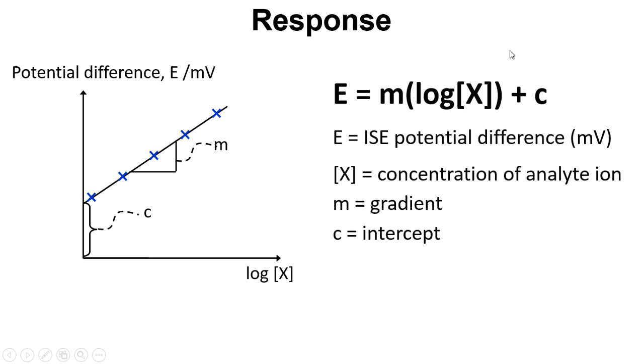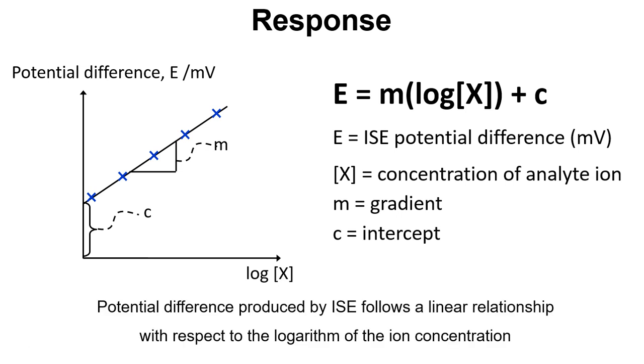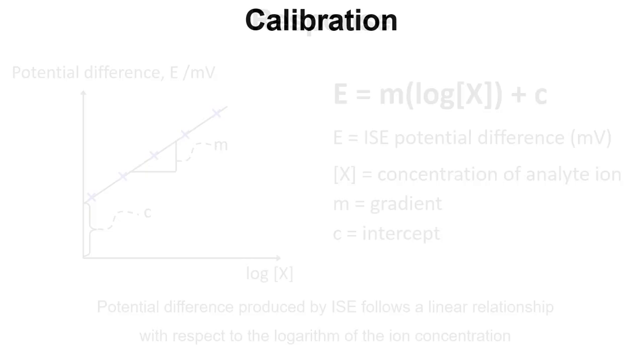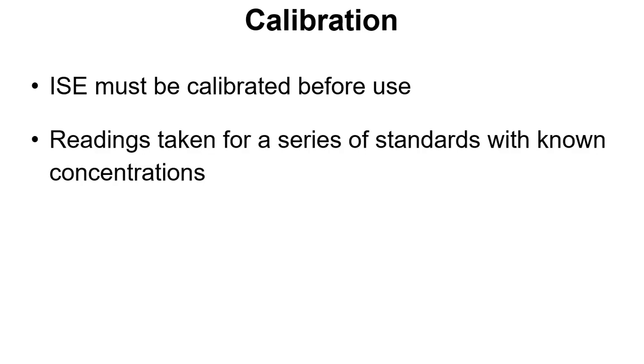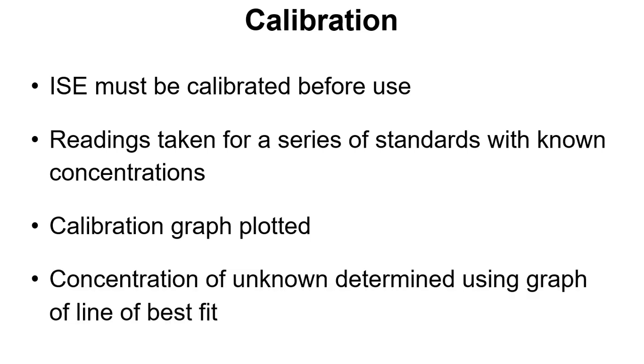So we see that the potential difference follows a linear relationship with respect to the logarithm of the ion concentration. In terms of calibration, ion-selective electrodes need to be calibrated before they're used and the readings are taken for a series of standards with known concentrations. Then we plot the calibration graph and we can work out the concentration of an unknown using the line of best fit.